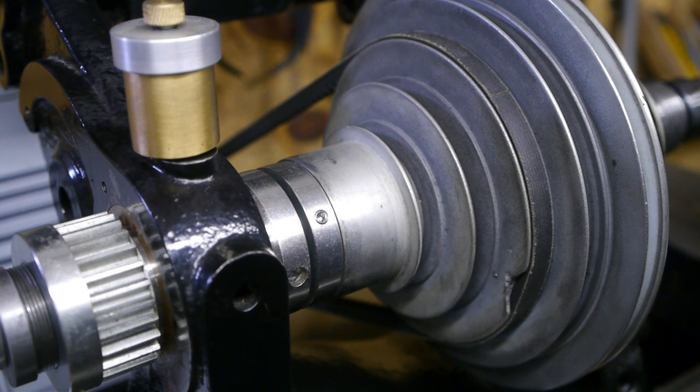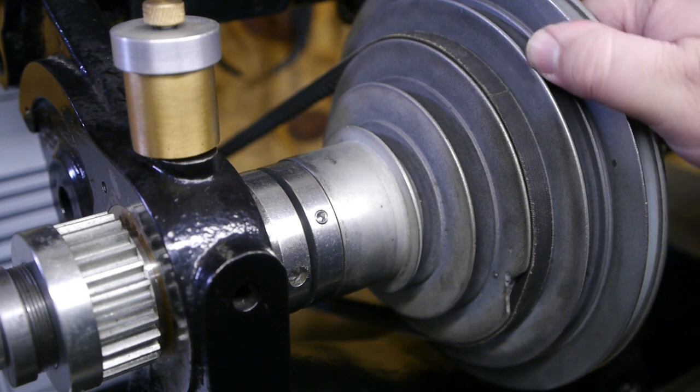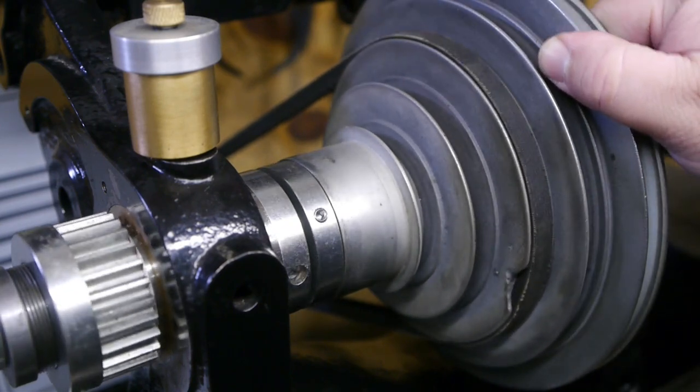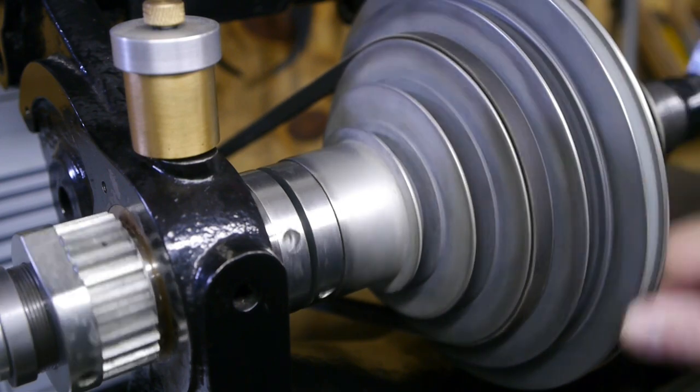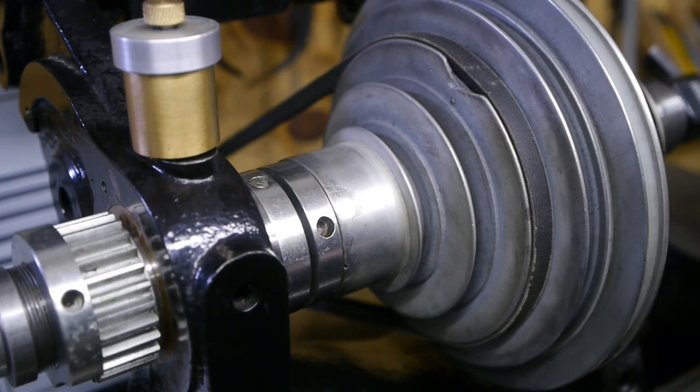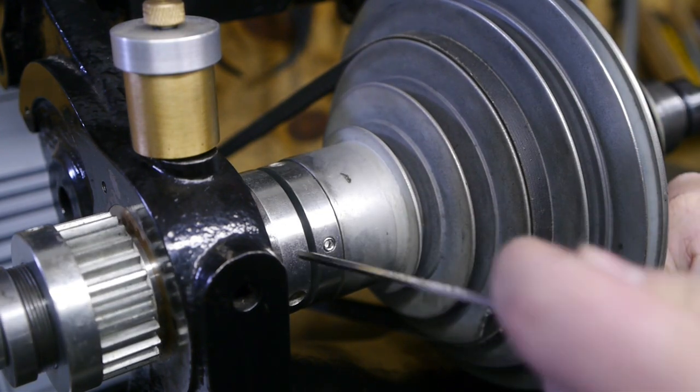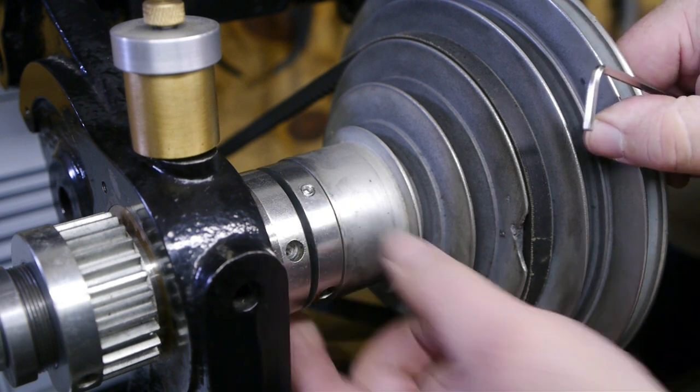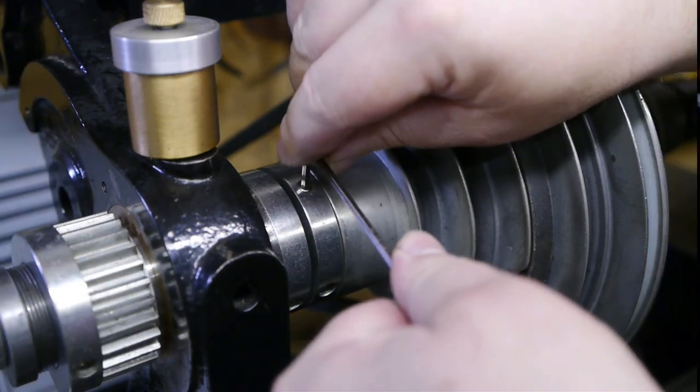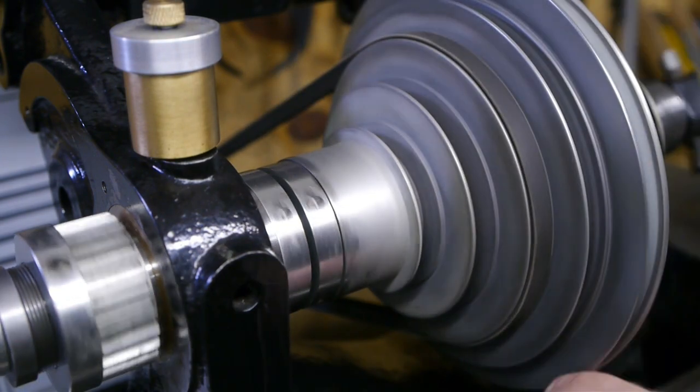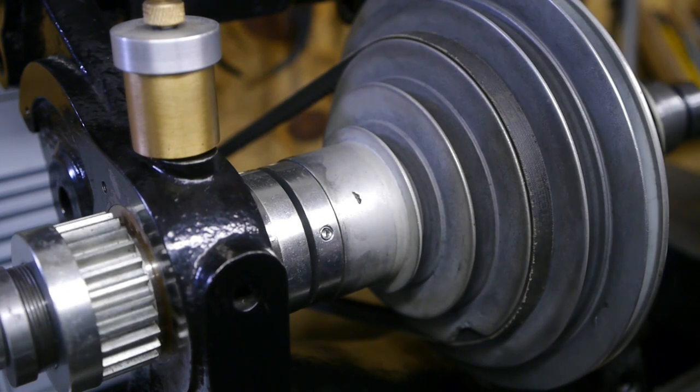The last time I was using the lathe, I was turning between centers, so the workpiece was keeping the spindle in place. So I never noticed it come loose. It's a bit too tight. All right, now we are going to finally do some fly cutting.